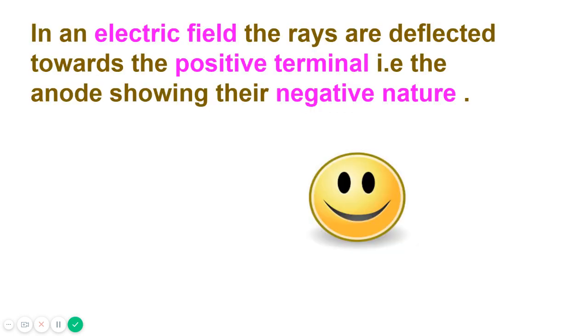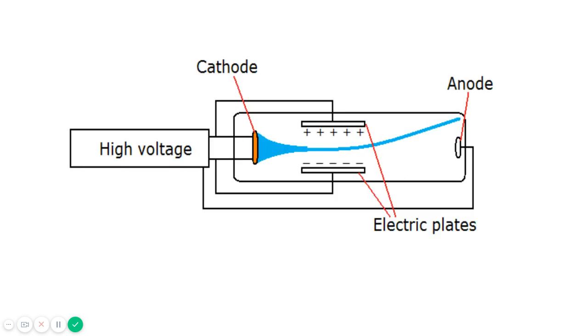The second property was in an electric field, the rays are deflected towards the positive terminal, that is the anode, showing their negative nature. So again in the magnetic field and in the electric field, the rays were deflected in a manner that showed their negative nature.